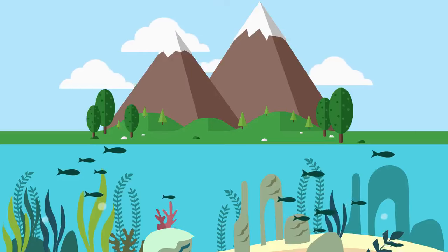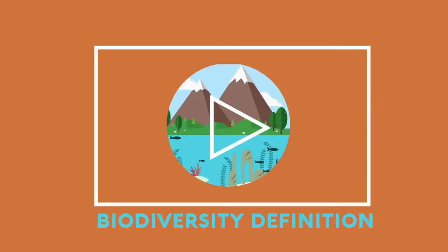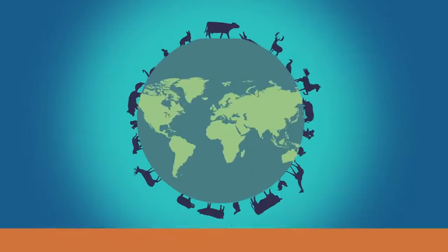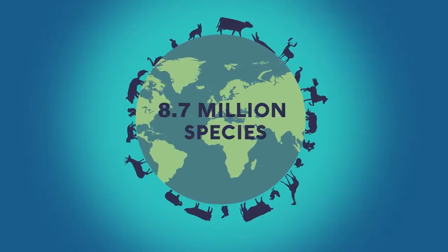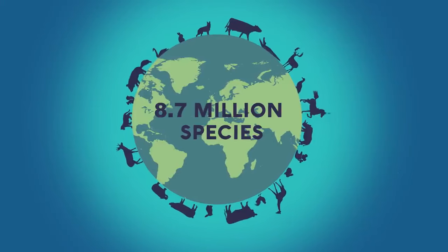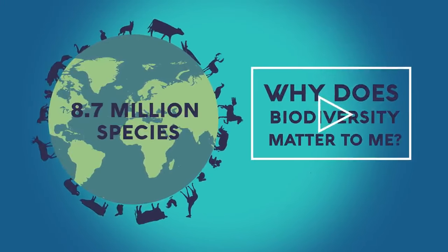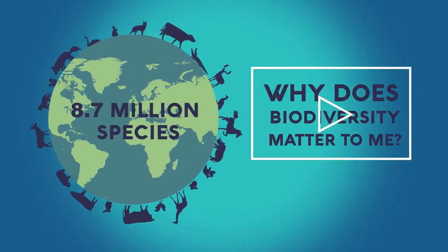Biodiversity is the variety of life, as we saw in this video. There are thought to be 8.7 million species on planet Earth, and biodiversity is of utmost importance to humans.